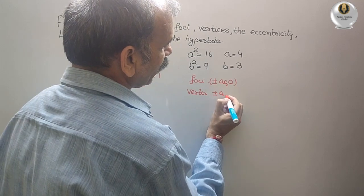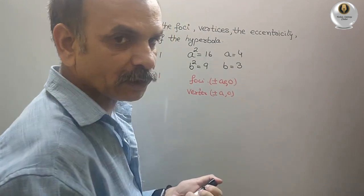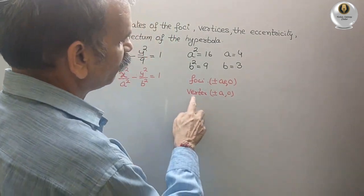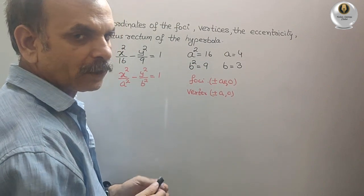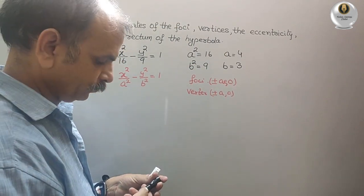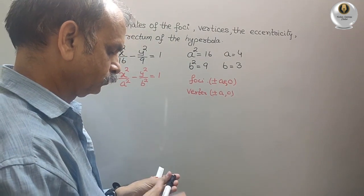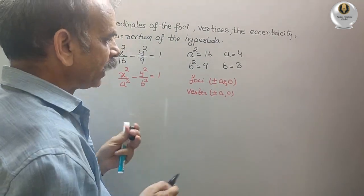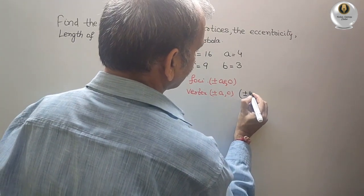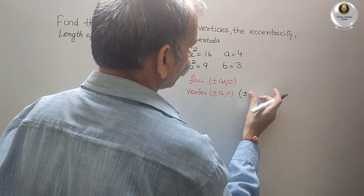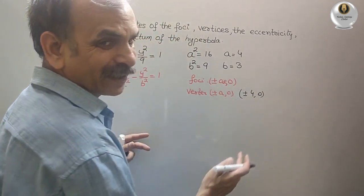So first we can find out vertex. Why? Because we know A. So that only will be right there. So therefore, what we will get? We will get here, plus minus 4 comma 0. So this is your vertex.